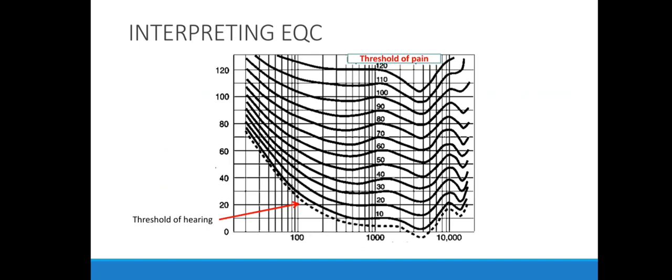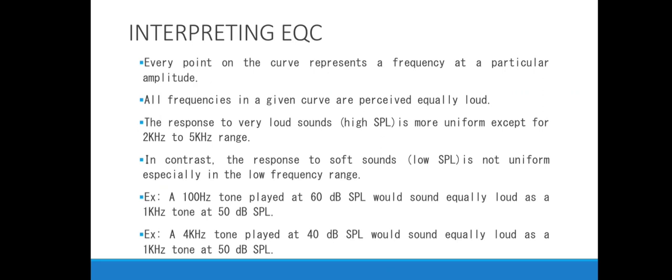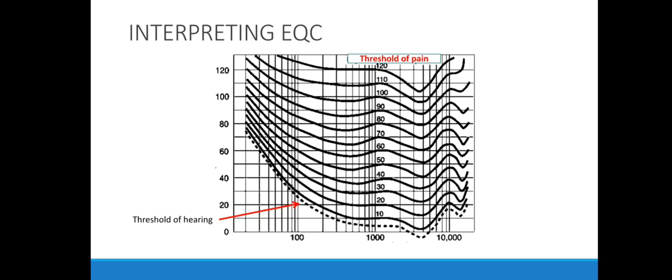The response to very loud sounds — high SPL — is more uniform, except for the 2 kHz to 5 kHz range. As you move toward high sound pressure levels, the curve is more or less flat, except in that range. But at low sound pressure levels, the curve is nowhere near flat — toward the bass region it is very steep, gets somewhat flatter toward the mids, and then there is a bump toward the treble region.